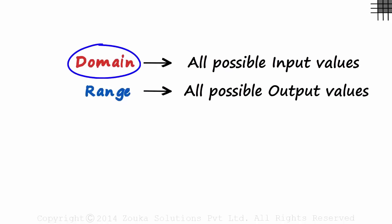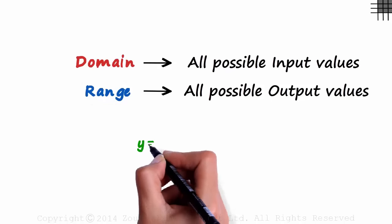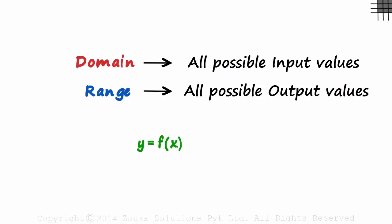The domain is the set of all values that go into the function and the range is the values that come out. So if we have a function like y is equal to f of x, the domain will be all possible values x can take. And the range will be all possible values for y.